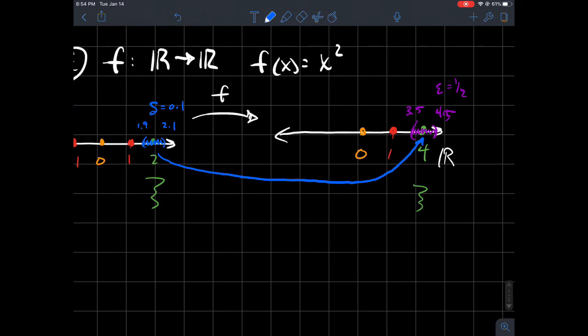In other words I should guarantee that I can find some window around the input that lands in this window around the output that we started with arbitrarily. I randomly picked that a half. If you square 1.9 you get 3.61, so 3.61 lands to the right of this point, so I'm in here.